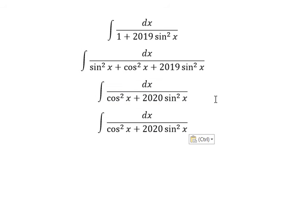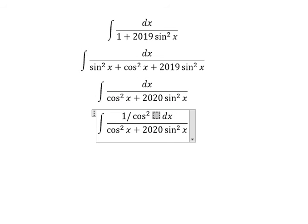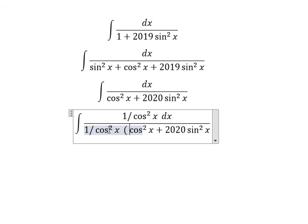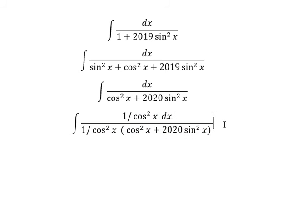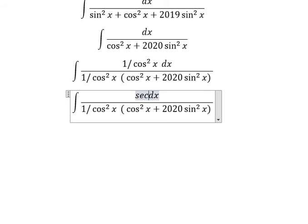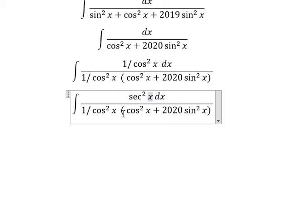Next, we need to multiply with 1 over cosine squared x on numerator and denominator. Then we change this one for sec squared x.